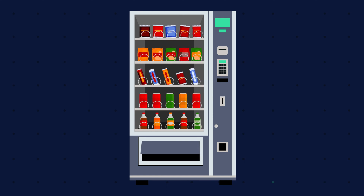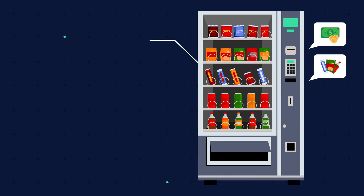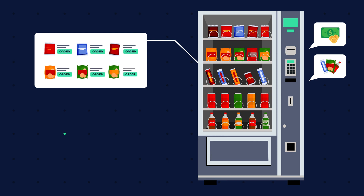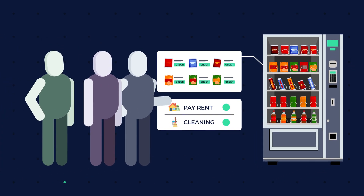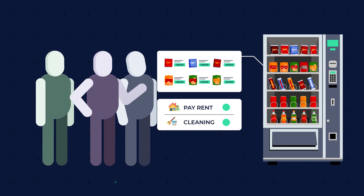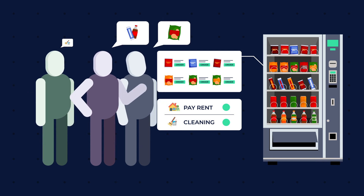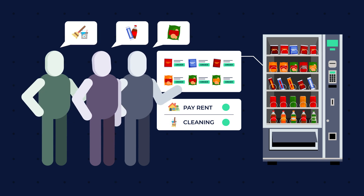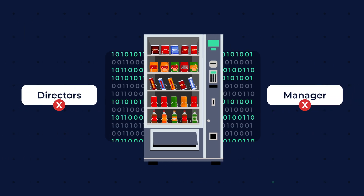Let's say there's a vending machine that's not only capable of accepting payment and dispensing snacks, but can also place an order for more snacks automatically. The vending machine can also pay its rent and order cleaning services by itself when required. Active users of the machine all have a say in how the machine operates — the users determine which snacks the machine should order and how often it should order cleaning services. There is no manager or board of directors, as all these processes were encoded into the vending machine when it was created.